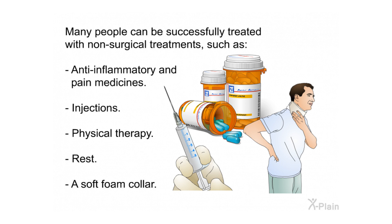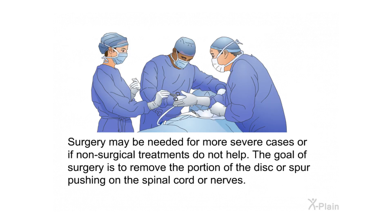Many people can be successfully treated with non-surgical treatments such as anti-inflammatory and pain medicines, injections, physical therapy, rest, and a soft foam collar. Surgery may be needed for more severe cases or if non-surgical treatments do not help. The goal of surgery is to remove the portion of the disc or spur pushing on the spinal cord or nerves.